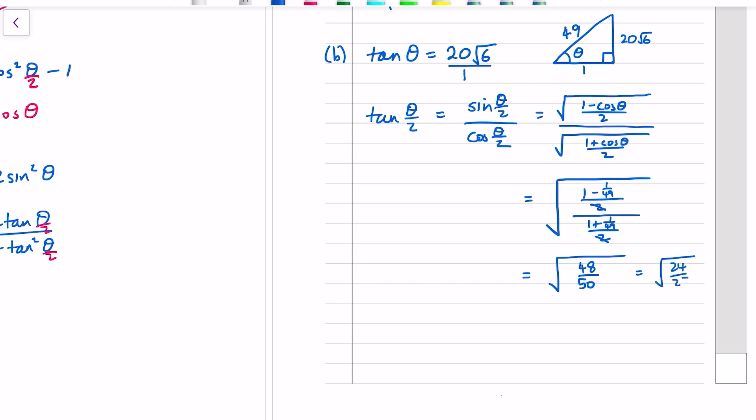And if you want to simplify even further than that, the 24 you can pull out a factor of 4. And on the bottom you can pull out a factor of 5. So we've got (2/5)√6. In your calculator if it's updated it'll simplify to that. Now we just need to repeat the process because we want tan(θ/4).